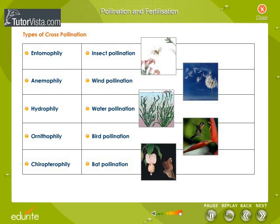Different mechanisms or modes of cross-pollination are listed here. Entomophily: pollination which is brought about by insects is known as entomophily, or insect pollination.